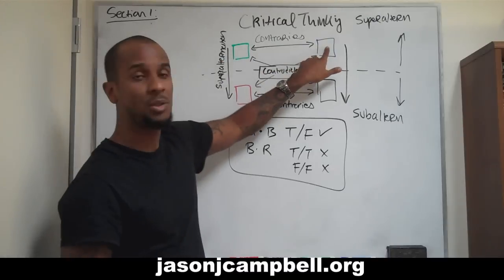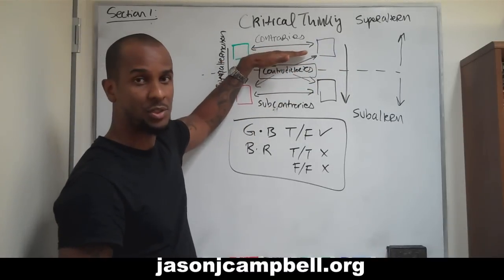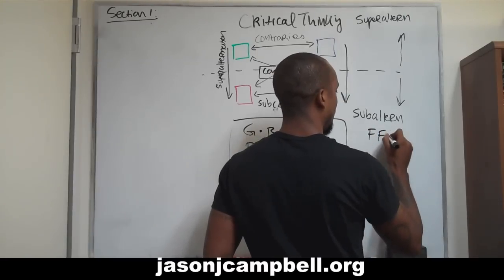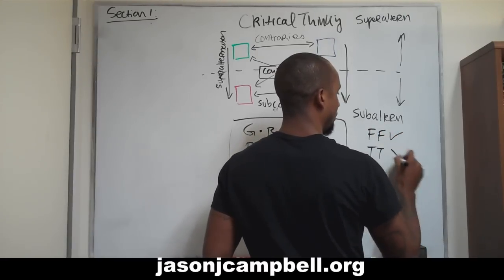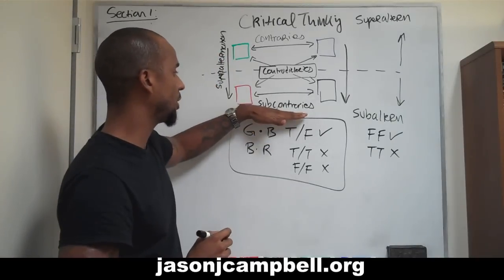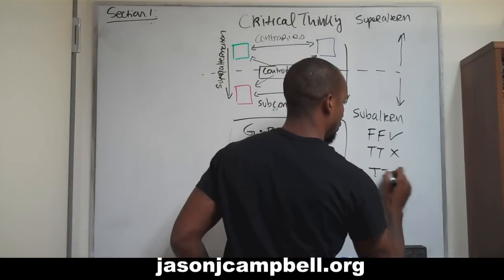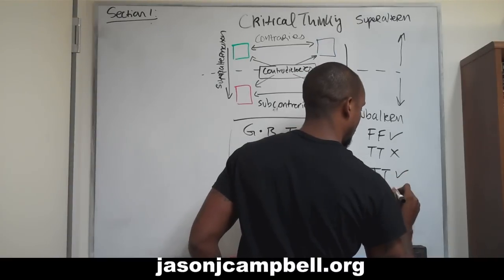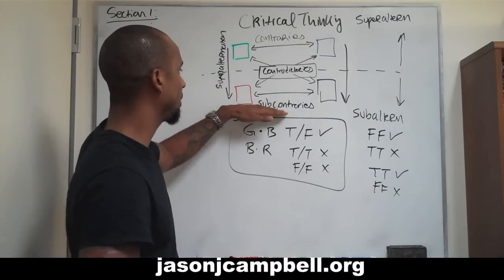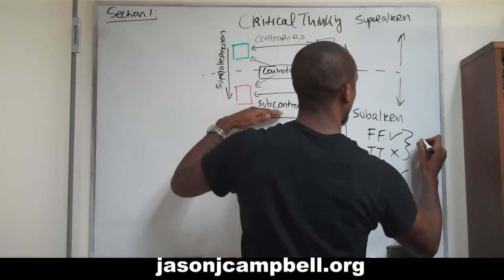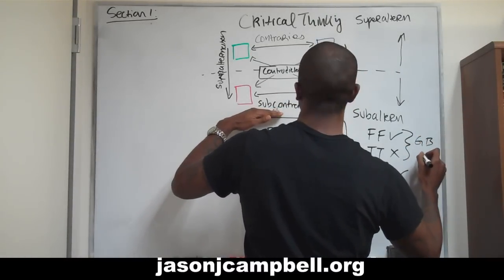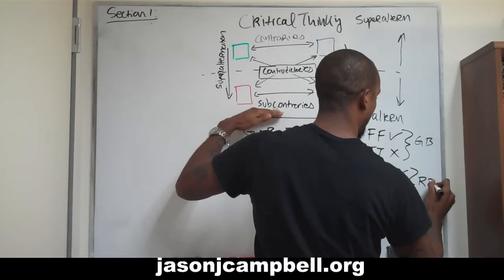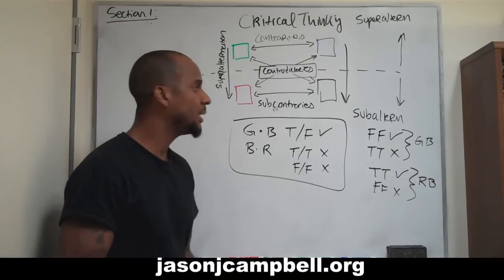The relationship between green and blue: contrary relationships — both can be false, that's okay; both true is not okay. Sub-contrary relationships: both true is okay, both false is not. For the contradictory relationship between green and black: one can be true and the other can be false — that's fine — but both cannot be true and both cannot be false. So the relationship between green and black, blue and green, red and black, and black and red — commit that to memory.